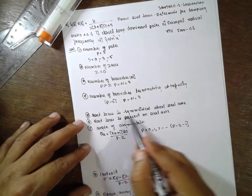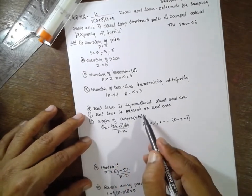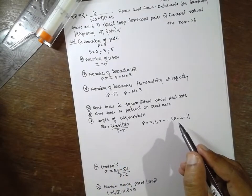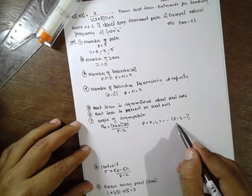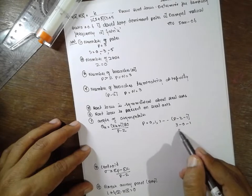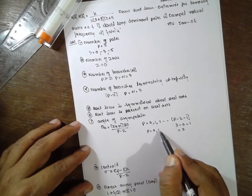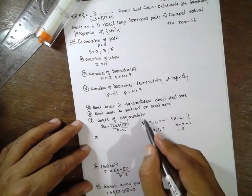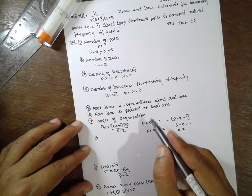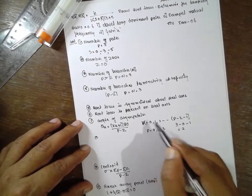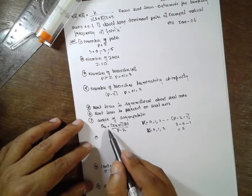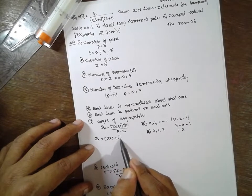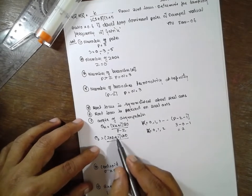Root locus has symmetry about the real axis. Root locus is present on the real axis. For the angle of asymptotes, P = 3 and Z = 0, so P minus Z = 3. K takes values 0, 1, 2. The formula is: angle = (2K + 1) × 180 divided by (P − Z). Substituting K = 0: angle θ₁ = (2×0 + 1) × 180 / (3 − 0).